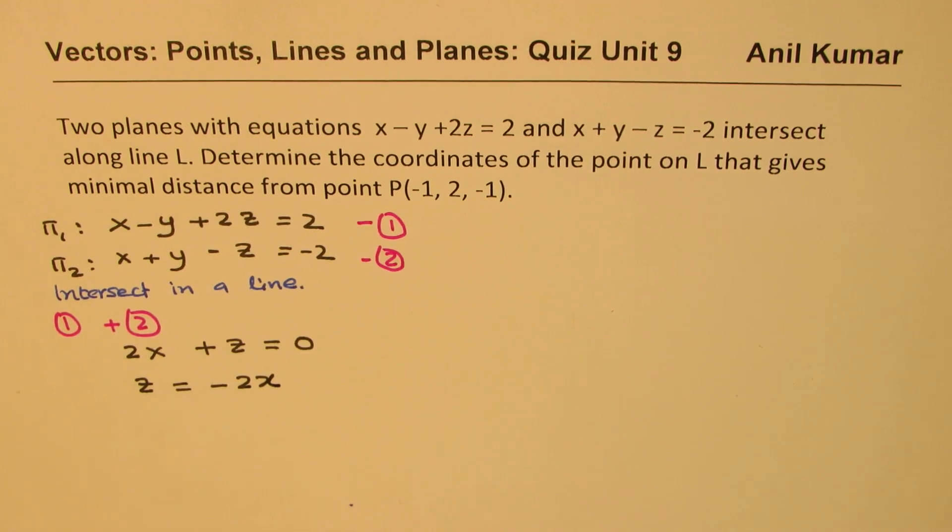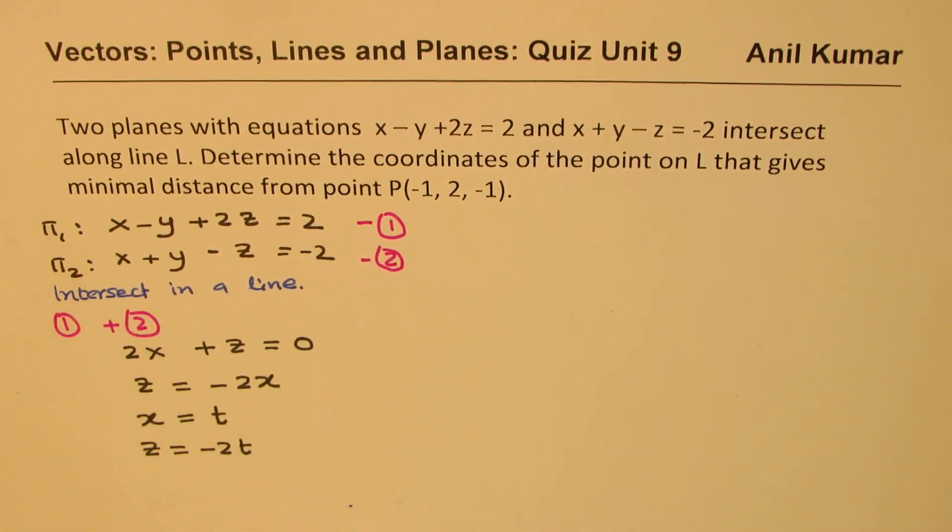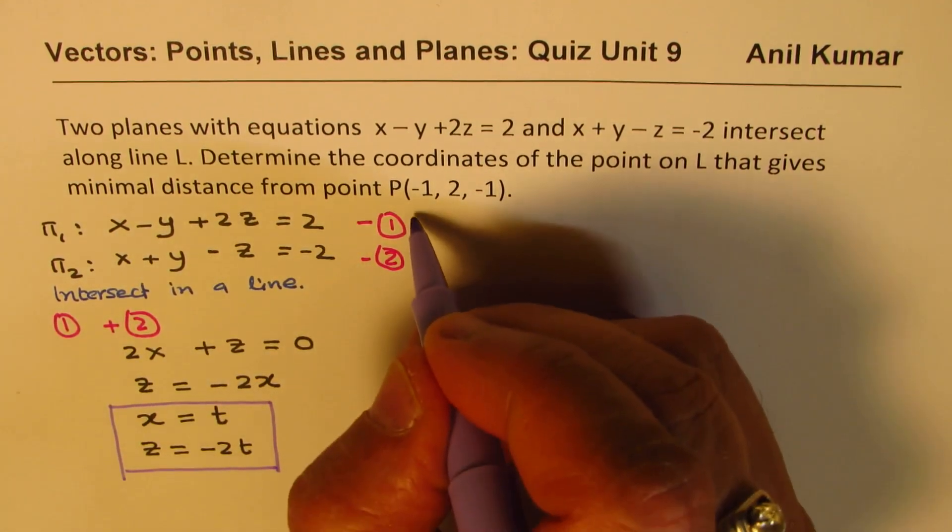We could write z equals minus 2x. And since I want to avoid fractions, I will take x equal to parameter t. In that case, z will be minus 2t. So we got x and z from here. We can also find y by substituting these values in the other equation.